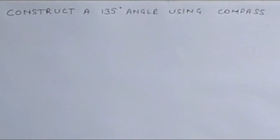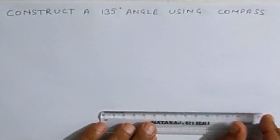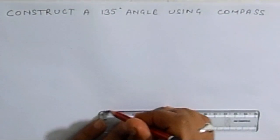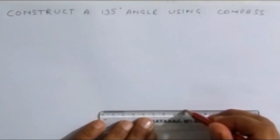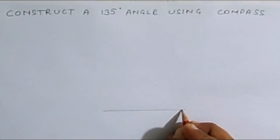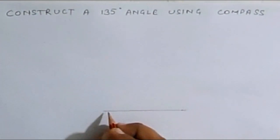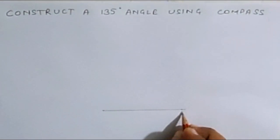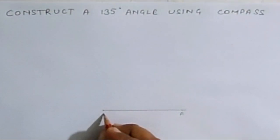Construct a 135 degree angle using compass. Draw a line segment. Mark A and B.